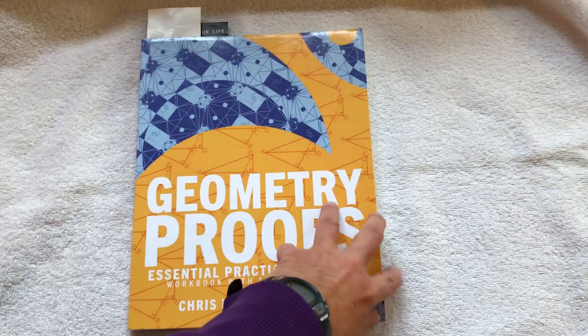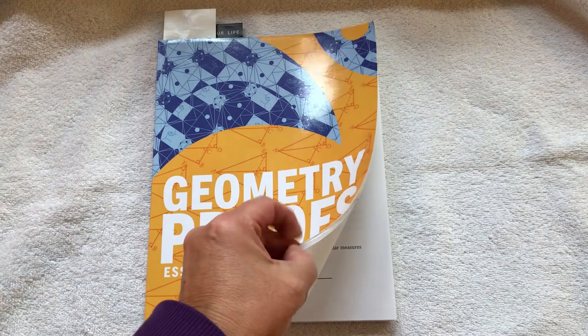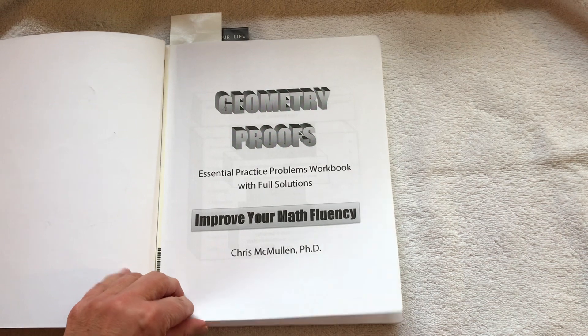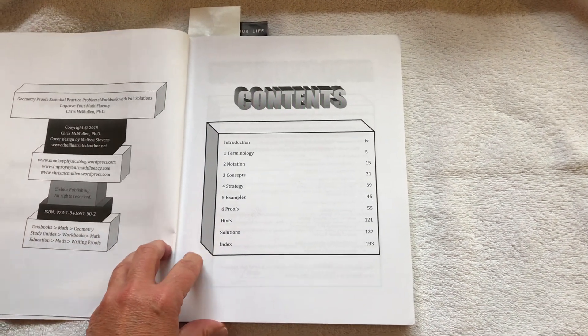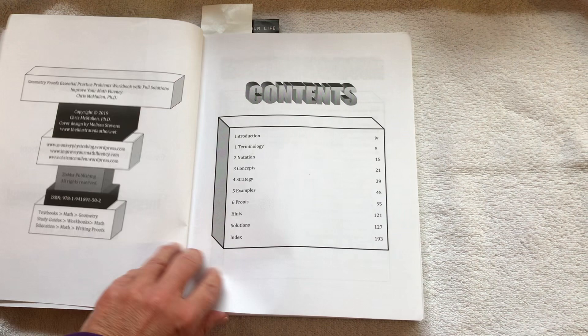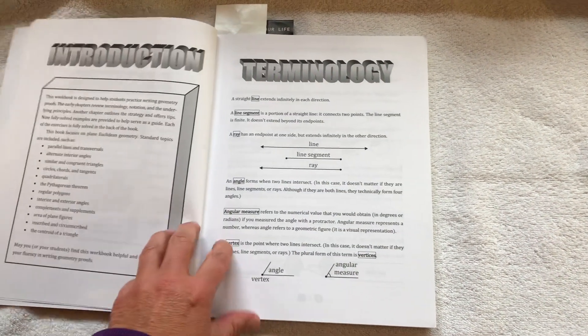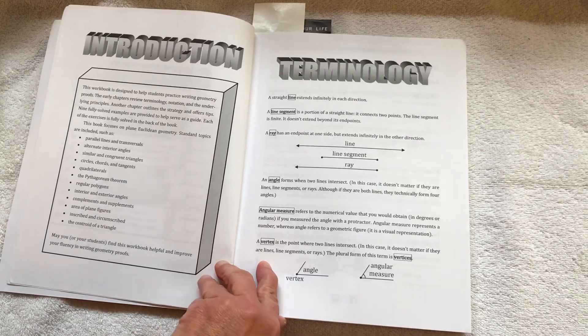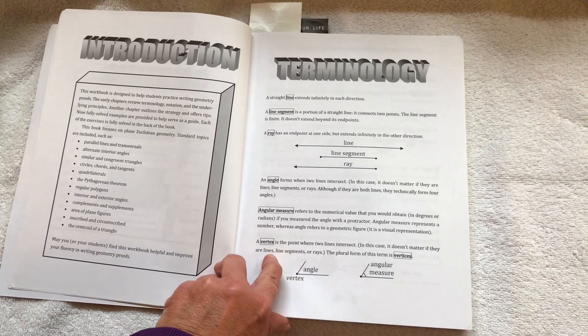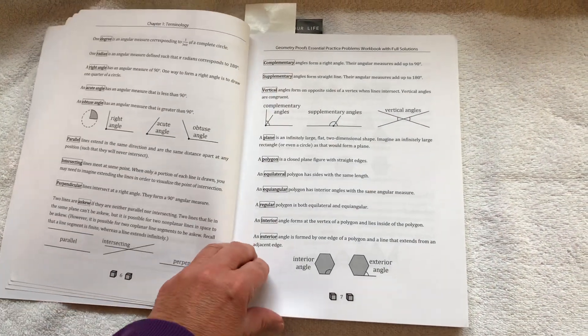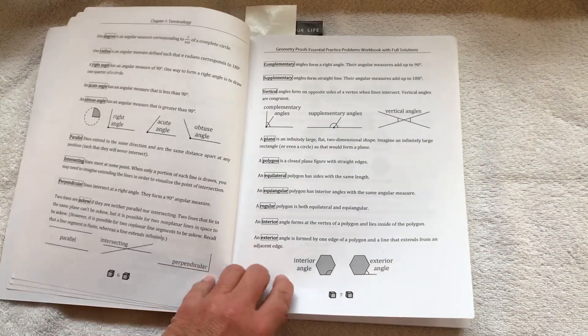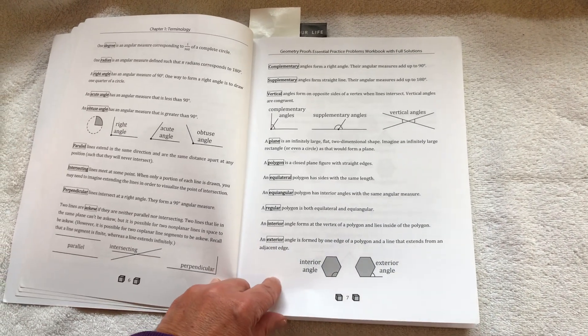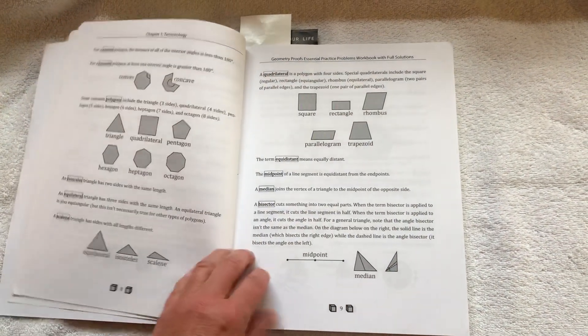Title page, contents. So the first, I'd say third or first quarter of the book is kind of a review or introduction to geometry terms and processes.